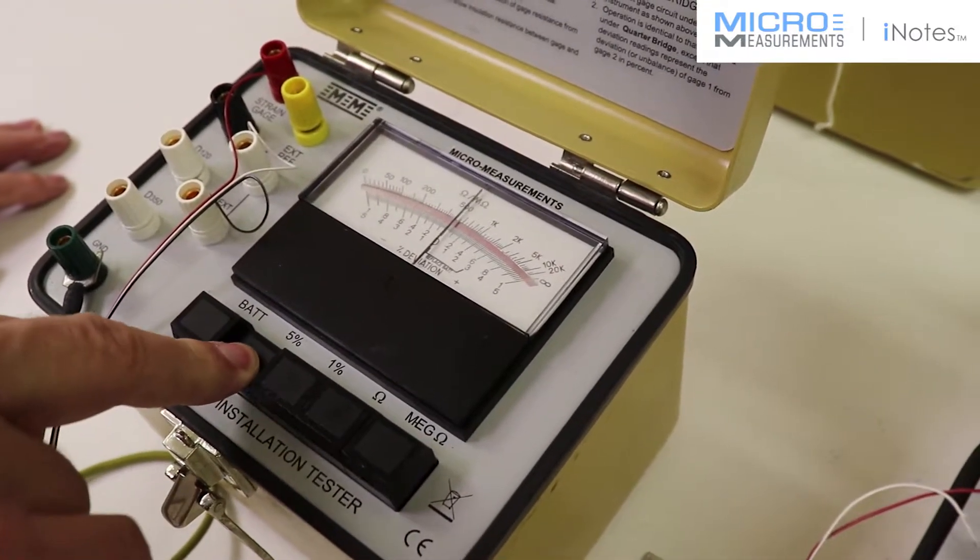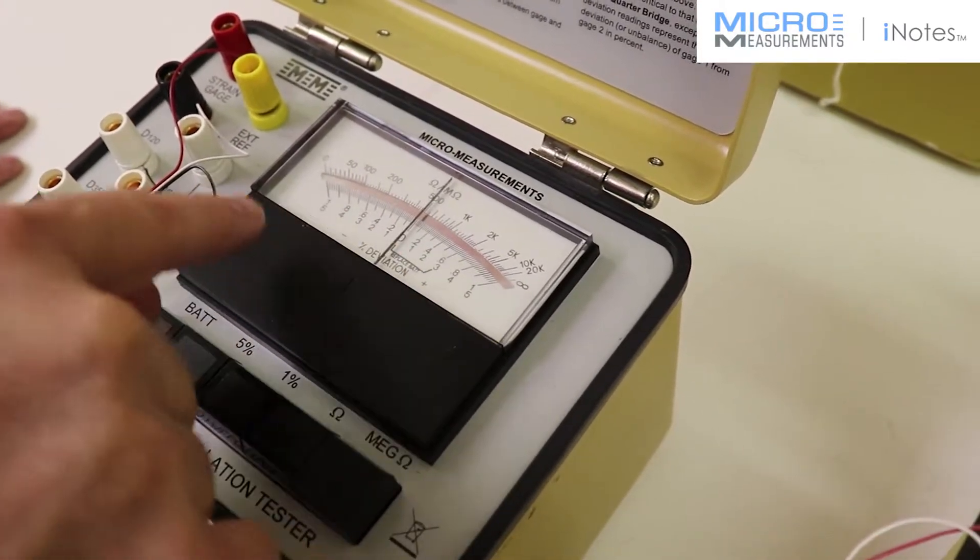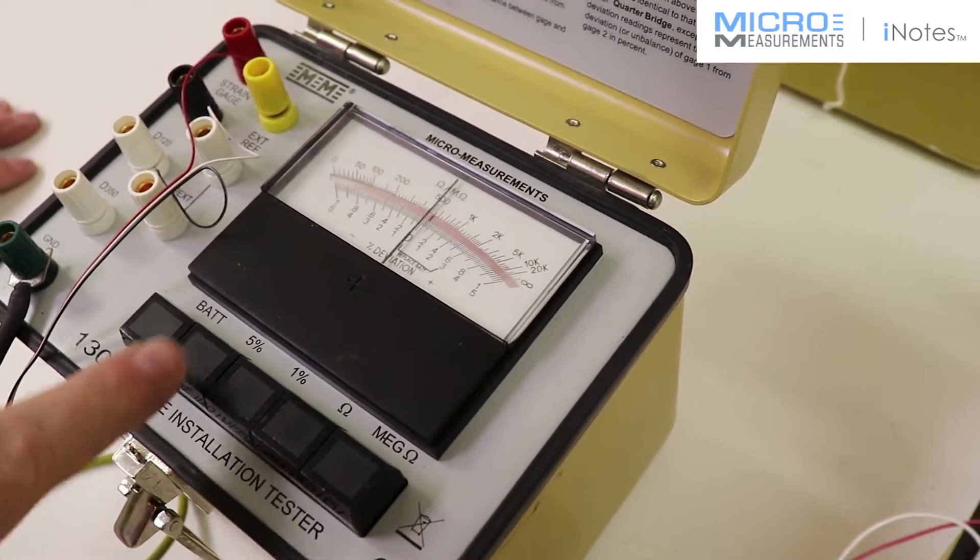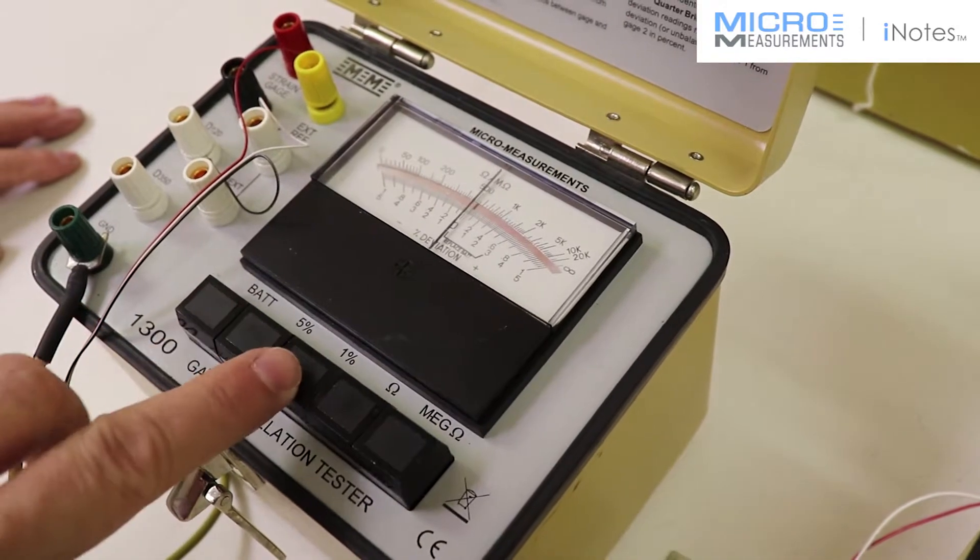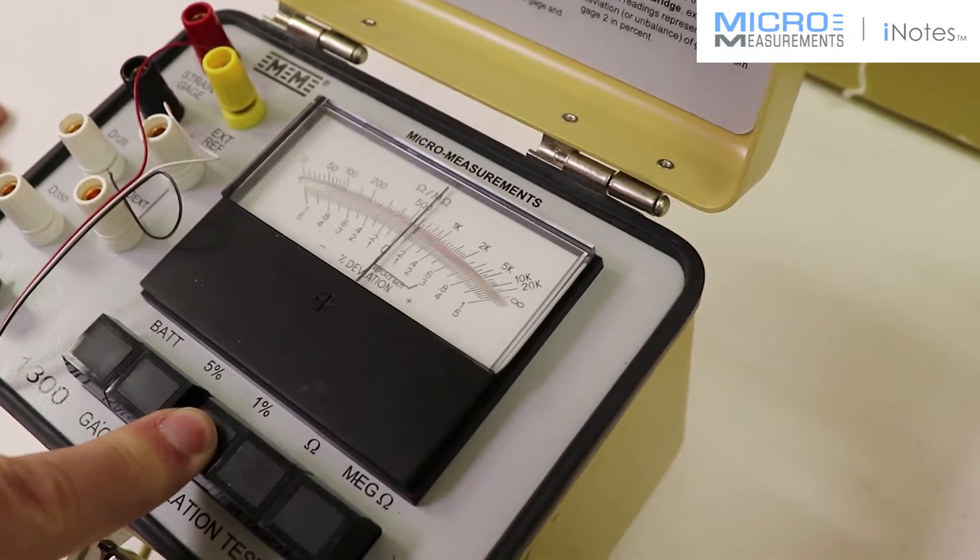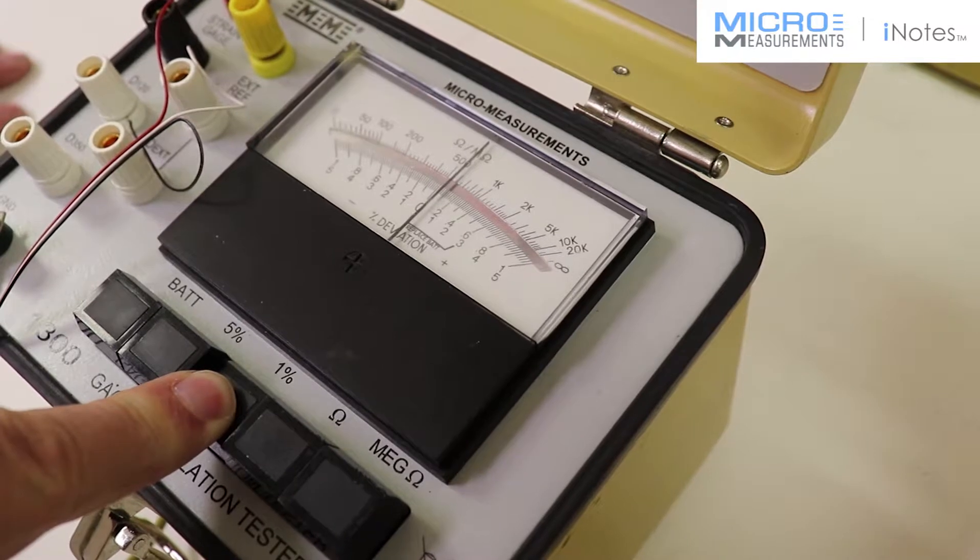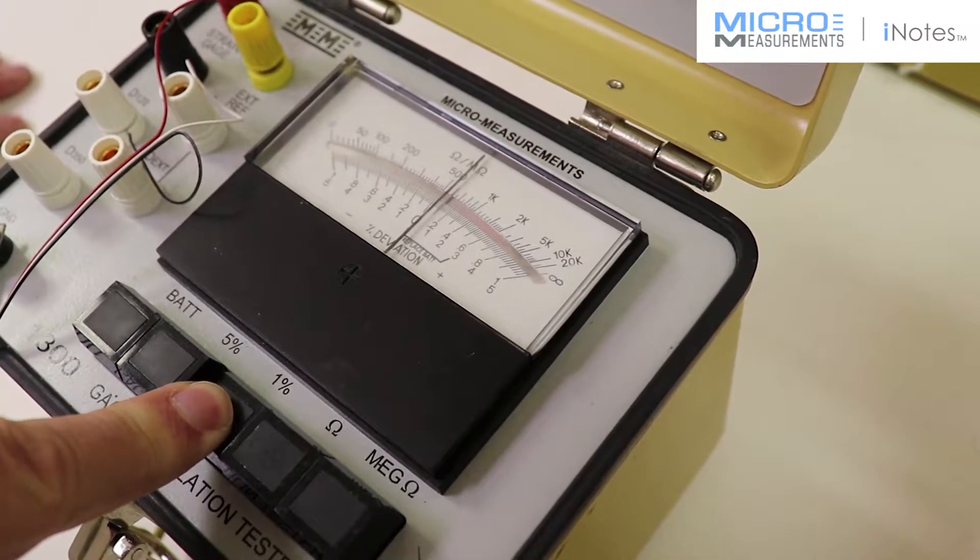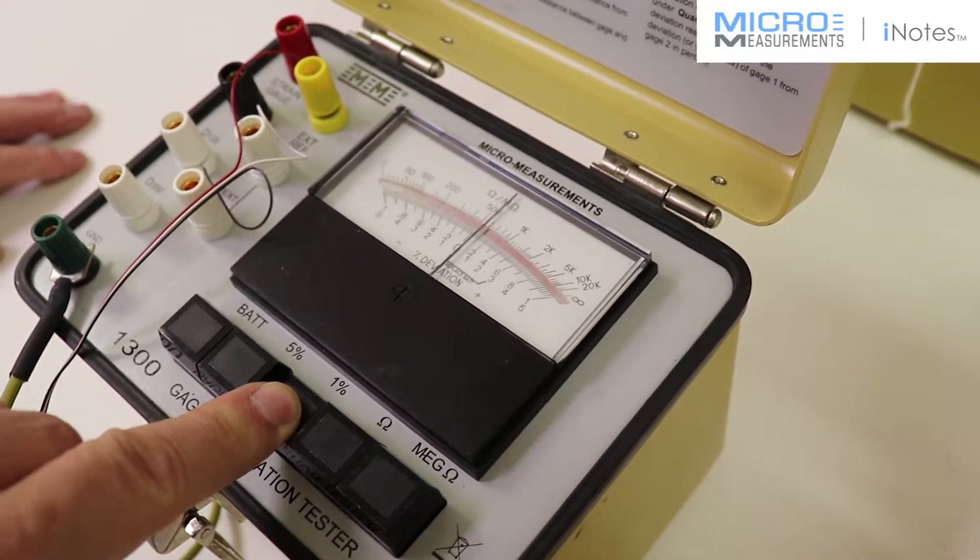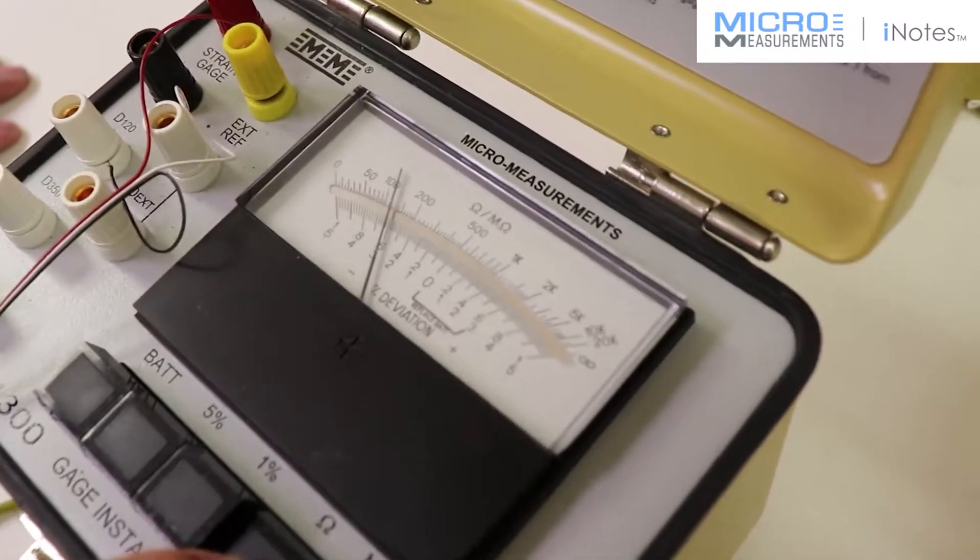At 5% as I push that, you'll notice that the needle really doesn't move. We're looking at a percent deviation comparing the installed resistance to a resistor inside the box. On the 1% scale, it goes up ever so slightly. I would say that's probably about 0.06%. If you remember the tolerance on these gauges from the package, it's plus or minus 0.3%. We can verify the resistance of the gauge. Sure enough, it does tell us that it's a 120 ohm.